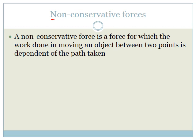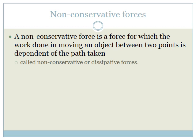A non-conservative force is a force for which the work done in moving an object between two points is dependent on the path. So a conservative force is non-dependent, but a non-conservative force is dependent on the path taken. These forces are either called non-conservative forces or dissipative forces, and you need to know both names. Dissipative means that it dissipates — in other words, it spreads out or makes something lose energy.